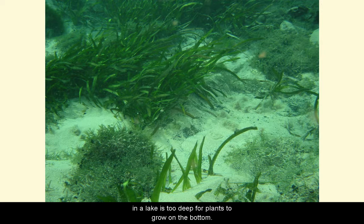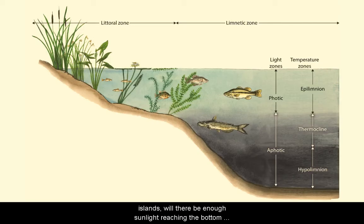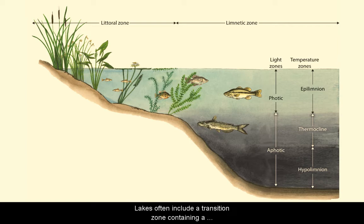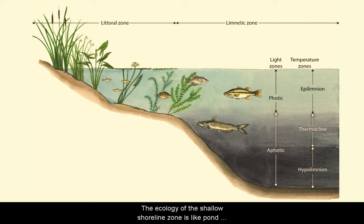Only in shallow areas, such as around the shoreline or islands, will there be enough sunlight reaching the bottom to allow plants to grow. These shallow areas are called the littoral zone. In at least some places, the water in a lake is too deep for plants to grow on the bottom. Lakes often include a transition zone containing a narrow band of wetlands extending out from the shore. The ecology of this shallow shoreline zone is a lot like pond ecology.